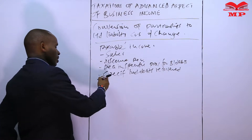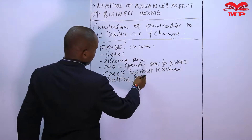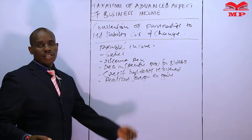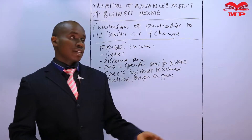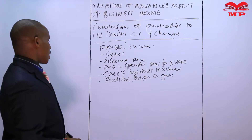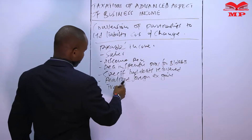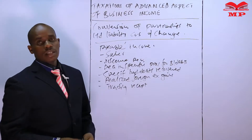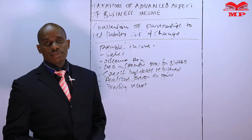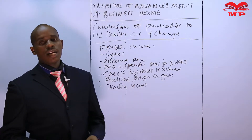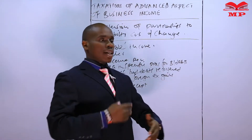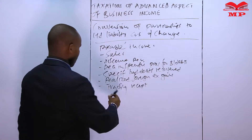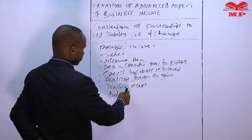Realized foreign exchange gains are also taxable income in the partnership. We also have trading receipt, which is a profit realized when you dispose of assets of a certain class of wear and tear at a price higher than the written-down value, and that particular business is continuing. That profit is also taxable.